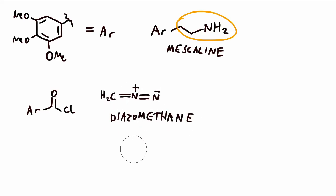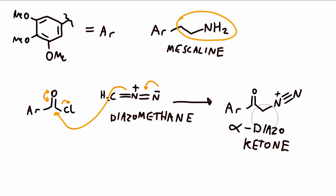So the nitrogen has some electrons here, and it reacts almost like an enol. It's nucleophilic at carbon. That adds into the carbonyl, and then after loss of a chloride ion, the product is this alpha diazo ketone.